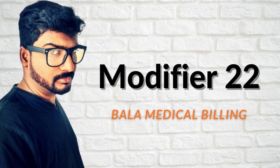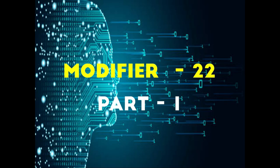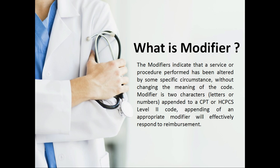Today we are going to learn about modifier 22. Before that, we should know what is meant by a modifier. The modifier indicates that the service or procedure performed has been altered by some specific circumstance — without changing the meaning of the code. Whenever there is some change, the modifier is utilized to give detailed information about why there is a slight modification in the procedure.